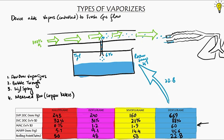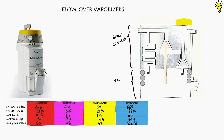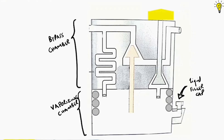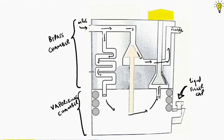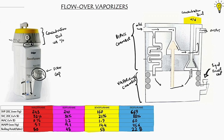Now, this is the basic working design of flow-over vaporizers. Different machines have different layouts, but the basic principle of variable bypass is the same. It has two main chambers: the bypass chamber and the vaporization chamber. There is a liquid filling cap and an indicator showing liquid level in the vapor chamber. The concentration dial above allows you to set a specific volume percentage of vapor desired in the final output. Wicks help maintain temperature by gathering heat from surroundings. Finally, there is a temperature-compensating cone or bimetallic strip that assists with temperature compensation.